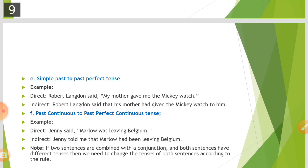Next, simple past changes to past perfect tense. For example: 'Robert Langdon said, my mother gave me the Mickey watch' becomes 'Robert Langdon said that his mother had given him the Mickey watch.' Past continuous also changes to past perfect tense. For example: 'Jenny said that Marlow was leaving Belgium' changes accordingly in the reported speech.